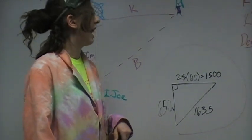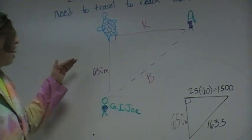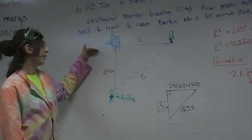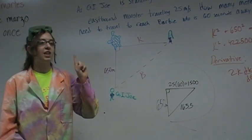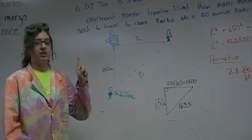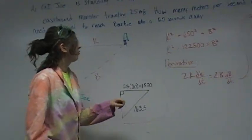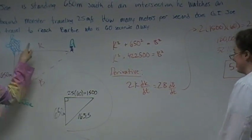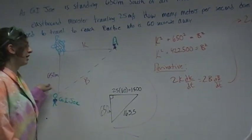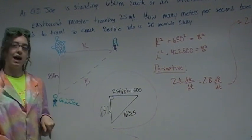So using that, we took our big diagram. And again, we used Pythagorean's wonderful theorem of solving right triangles. And we did K squared plus 650 squared equals B squared to solve for the hypotenuse.